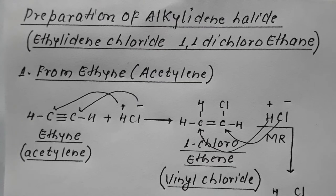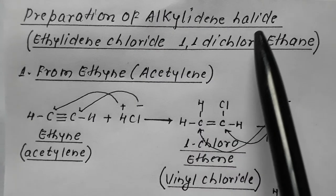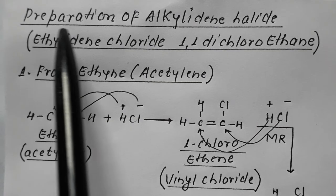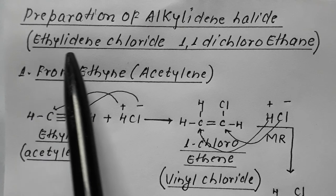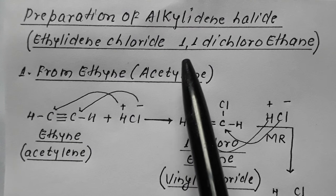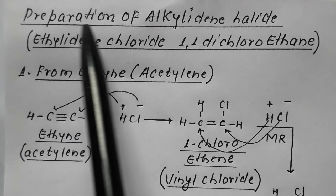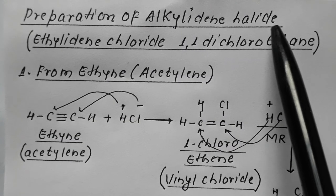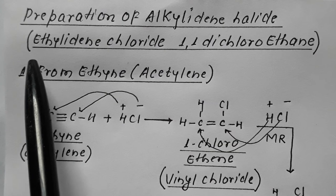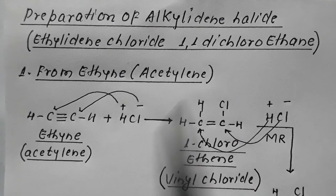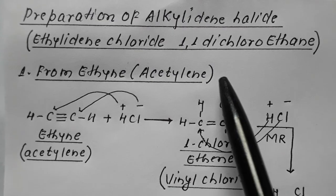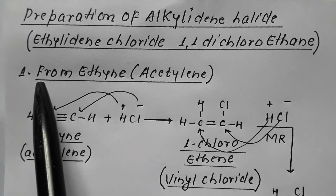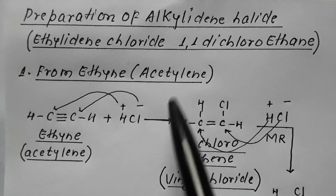Next is the preparation of alkylidene halide. We are preparing ethylidene chloride, that is 1,1-dichloroethane. The first method is from ethyne (acetylene).